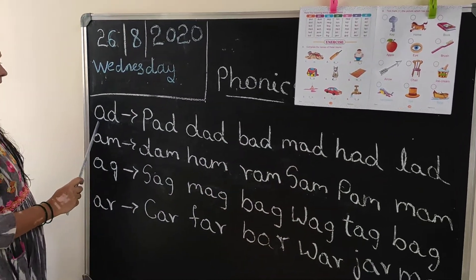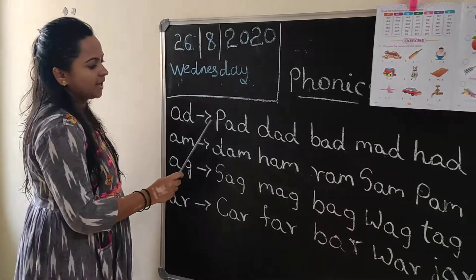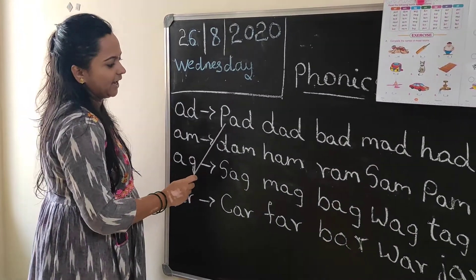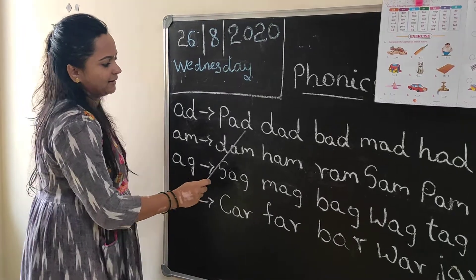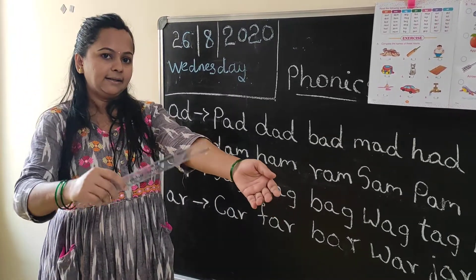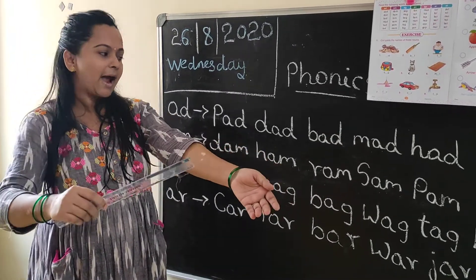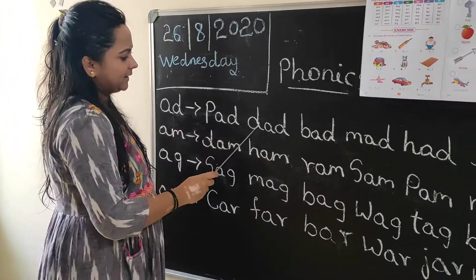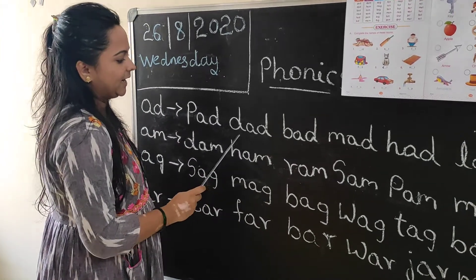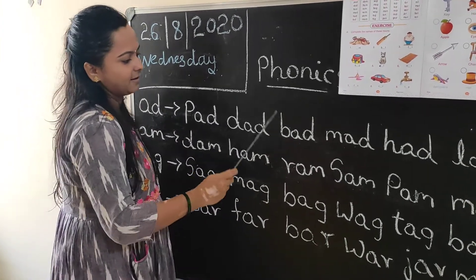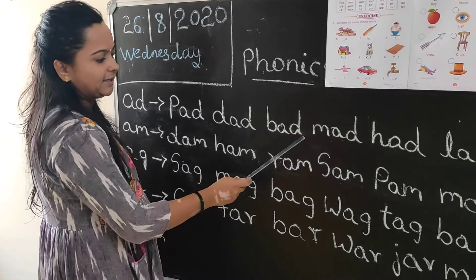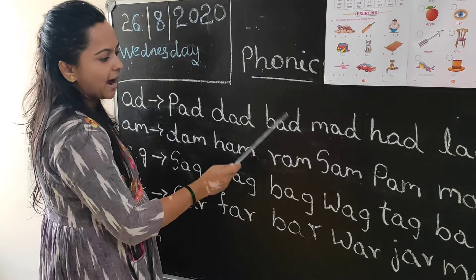AD words. T-A-D, tad. P-A-D, pad. D-A-D, dad. B-A-D, bad.